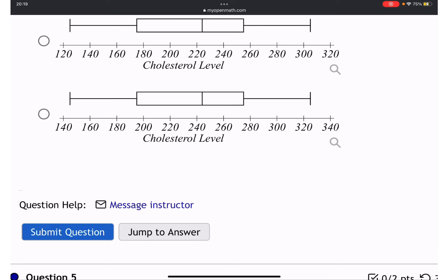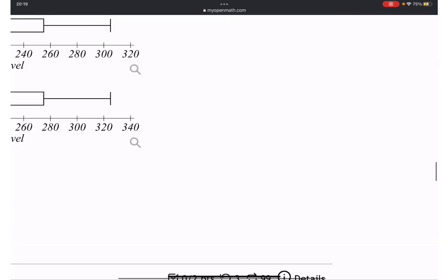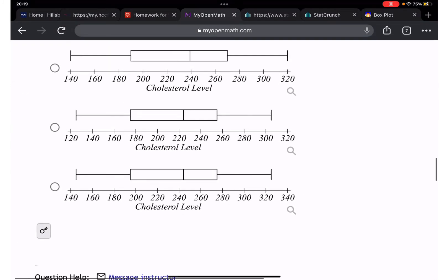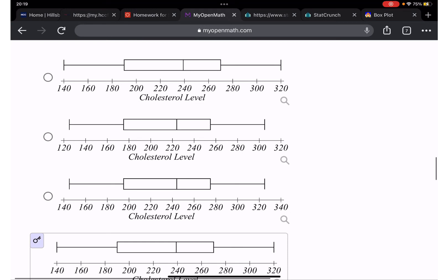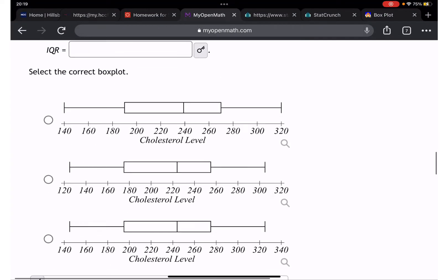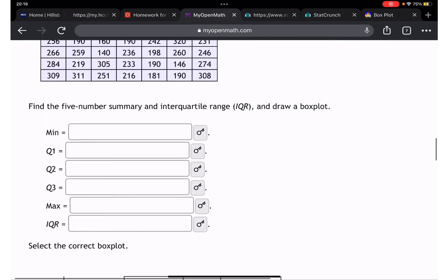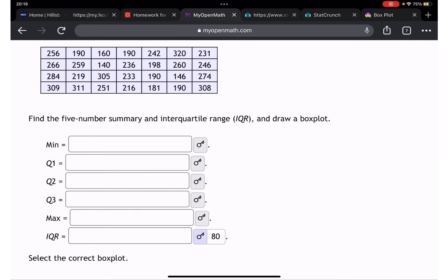Let me jump to the answer. You can see the answer. You can do it yourself, try it and see. This is going to be the answer. Let me open here all the answers. Minimum 140, so in the table minimum is 140. Maximum is 320, so in the table maximum is 320.